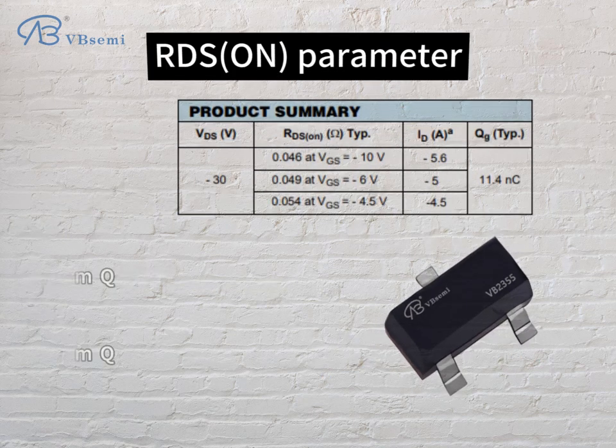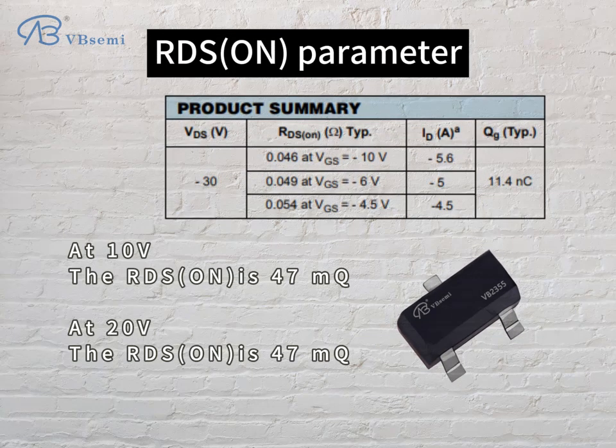RDS on parameter: at 10V, the RDS on is 47mΩ; at 20V, the RDS on is 47mΩ.